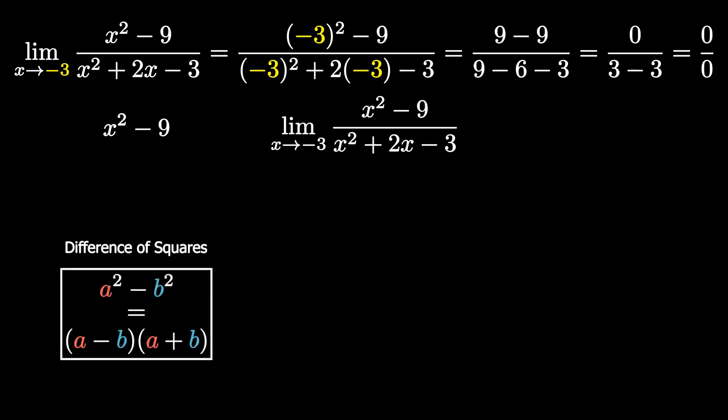And essentially, what you want to do is you want to take the square root of x squared, which is x, the square root of 9, which is 3, and then you want to plug in these values x and 3 into the following formula, where it will become x minus 3 times x plus 3, or you can do x plus 3 times x minus 3, it does not matter. But this is how you would factor this perfect square.